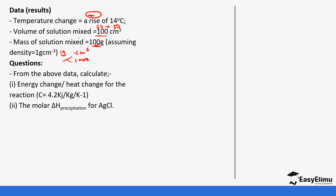From the data given, calculate the heat change using specific heat capacity of 4.2 kJ/kg/K, and then the molar heat of precipitation of silver chloride. We will start with the calculation of heat change. The heat change is: specific heat capacity times mass of solution times change in temperature.